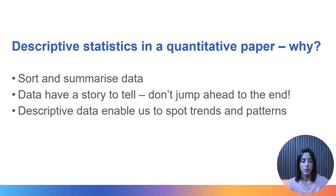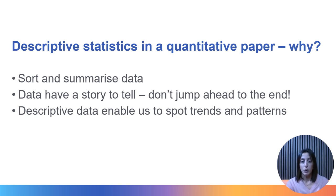For example, in a randomized control trial we might want to check whether a treatment was effective, or in a cohort study we might want to know if there was an association between one predictor and the outcome variable. Nonetheless, the data have a story to tell, and while it's tempting to skip to the end of the book to find how the story ends, it often does not make much sense if we don't follow the whole plot. Without focusing on descriptive statistics first, it is difficult to spot trends and patterns and to draw robust conclusions from the available data.